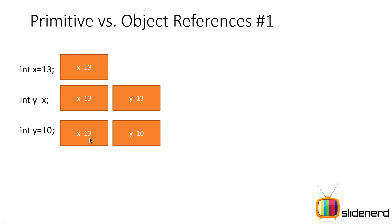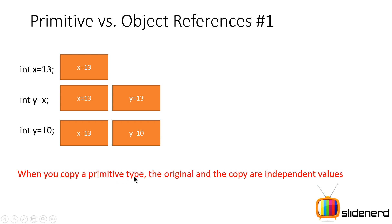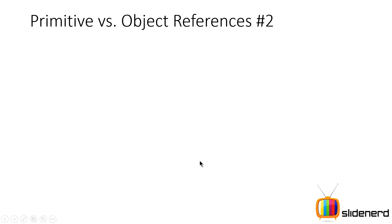If you then say int y = 10, the value of y changes to 10 while the value of x remains 13. So for primitive types in Java, when you copy a primitive, the original and the copy are different, independent values — remember that statement well.